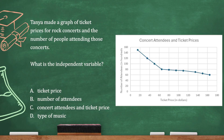Tanya made a graph of ticket prices for rock concerts and the number of people attending those concerts. What is the independent variable? If you have your four fingers pointing upward with your thumb out to the side, your thumb is independent of those other fingers. So the horizontal axis is the independent variable — ticket price. And the dependent variable is the vertical axis — the number of people attending.